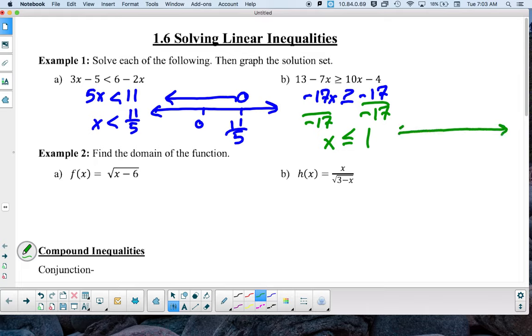So we draw our number line again. 0, 1. And now because it's less than or equal to, we're going to have a closed circle. And then we shade to the left.